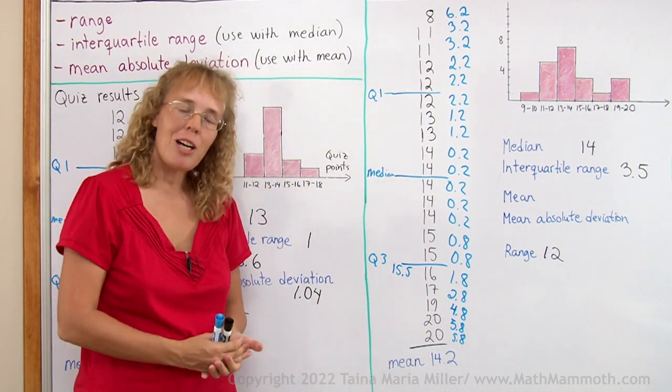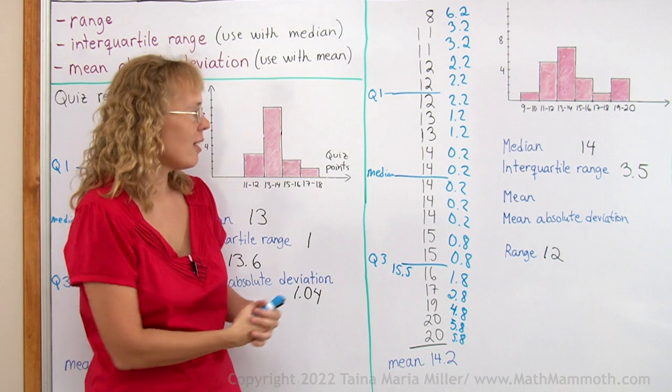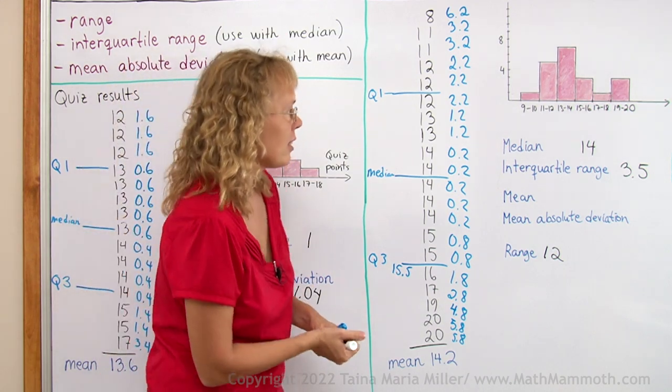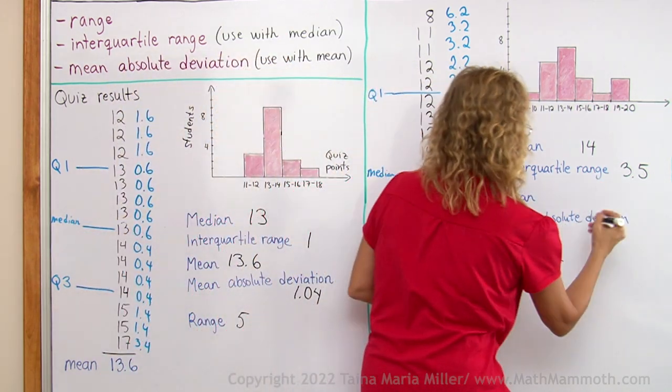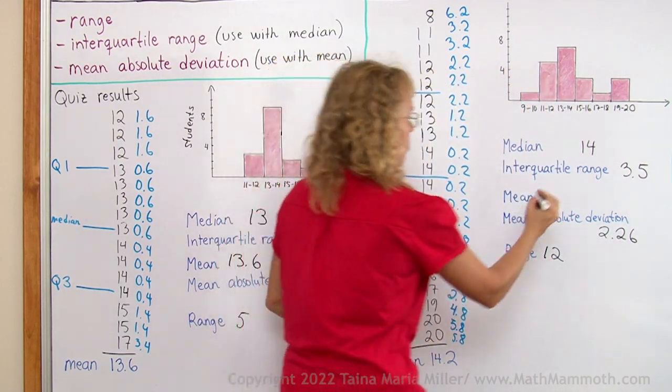And then you would add those up and divide by 20, however many there are. And I calculated it and it is 2.26. And the mean was 14.2.